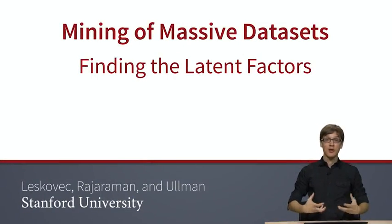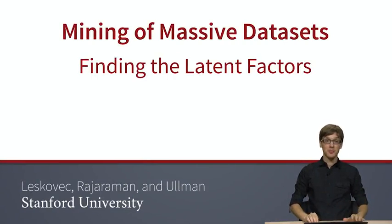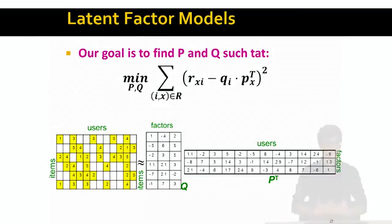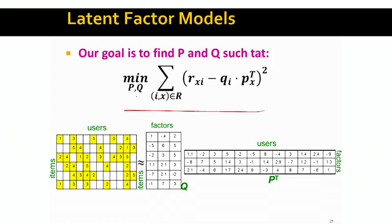What we will learn next is how to actually find the latent factors, or in other words, how to solve our optimization problem. We are given the matrix R, and we want to represent it as a product of matrices Q and P. The way we want to find matrices Q and P is such that it best predicts the known ratings. We want to find P and Q such that the predicted ratings are as close to true ratings as possible.